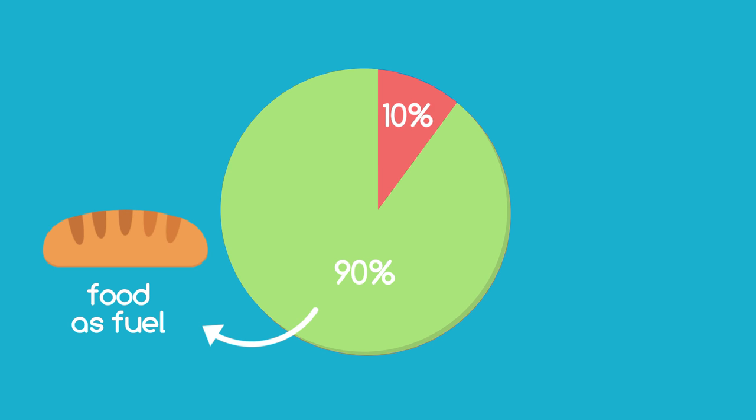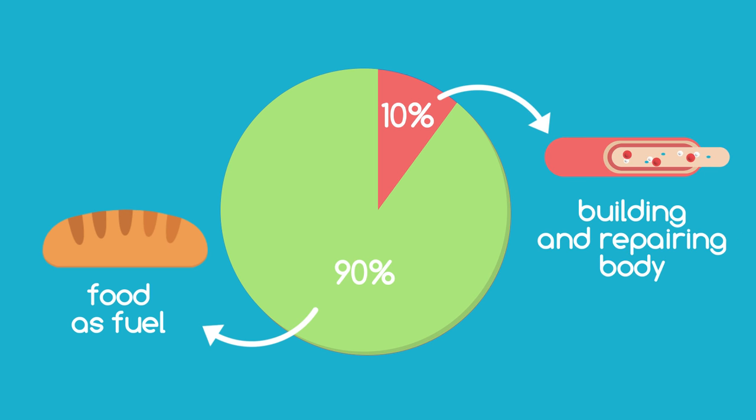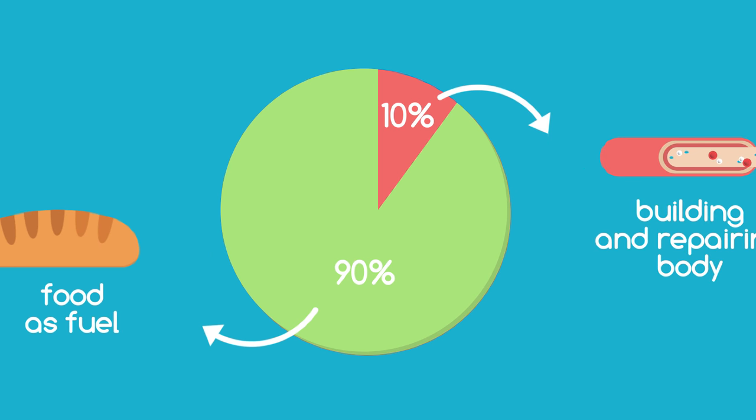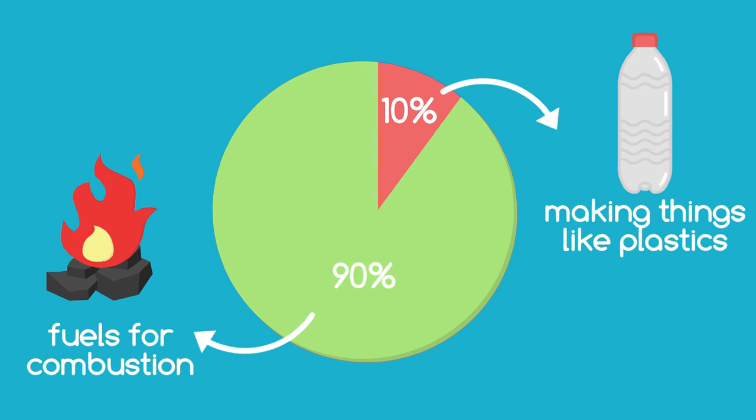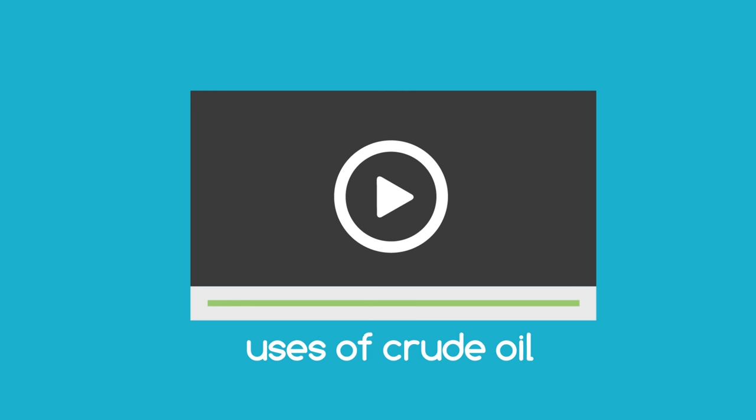Just as we use 90% of our food as a fuel and only 10% for building and repairing our bodies, so with fossil fuels, 90% are used as fuels and are combusted and only 10% are used to make things such as plastic. See the linked video on the uses of crude oil.